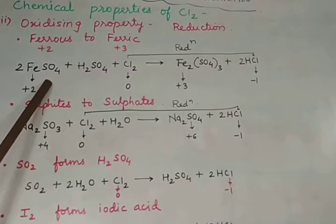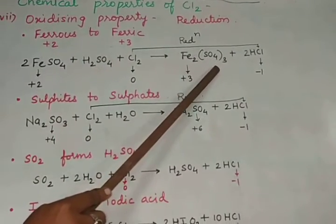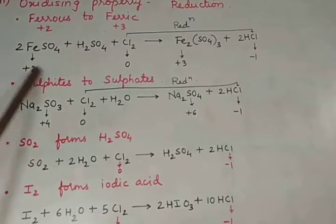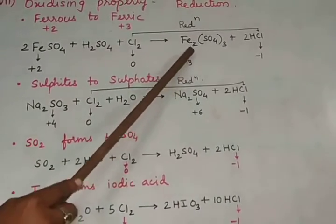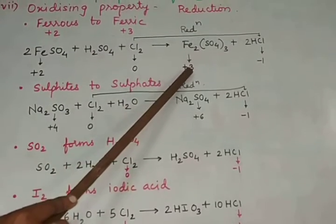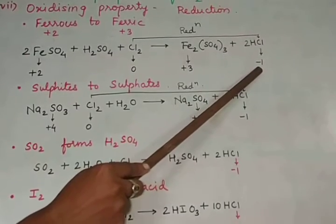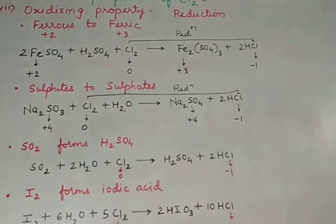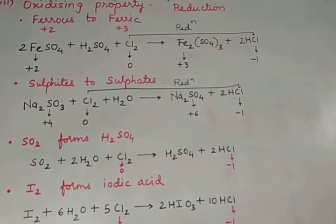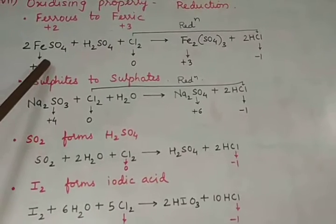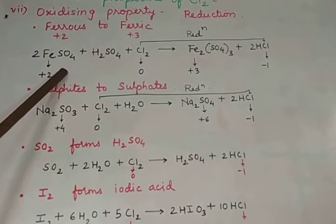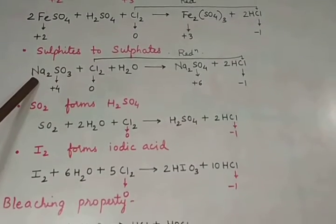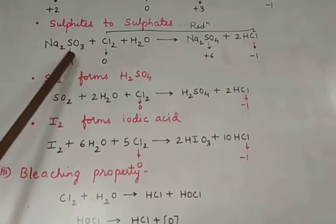Fe2(SO4)3 is ferric sulfate and FeSO4 is ferrous sulfate. If you calculate the oxidation state of Fe in FeSO4 you find it as plus two, for chlorine it is zero. In ferric sulfate, the oxidation state of Fe is plus three, and in HCl, Cl becomes minus one. Chlorine is undergoing reduction — decrease from zero to minus one — forcing Fe to undergo oxidation, so chlorine acts as oxidizing agent.